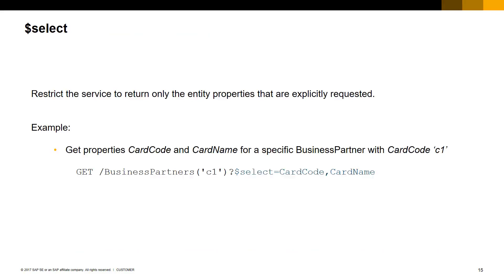The $select option restricts the service to return only the entity properties that are explicitly requested. With this option, the size of the response body can be reduced, and for a small network bandwidth, performance can be improved. The example shows a GET request to retrieve a specific business partner entity with CardCode C1, restricting the properties returned to only CardCode and CardName by using the $select query option.